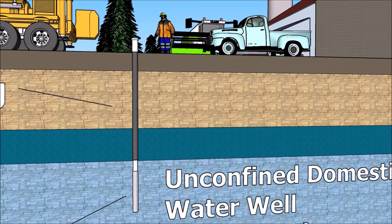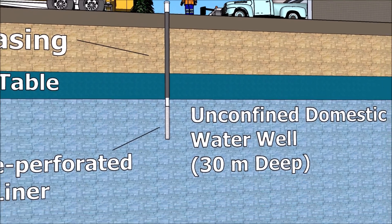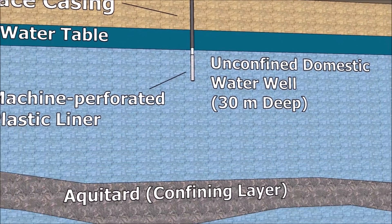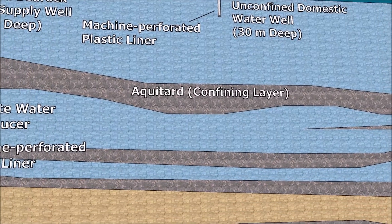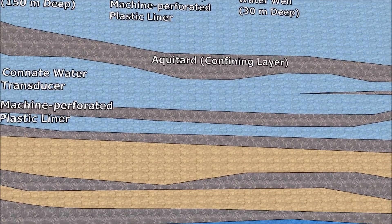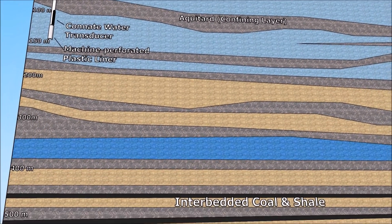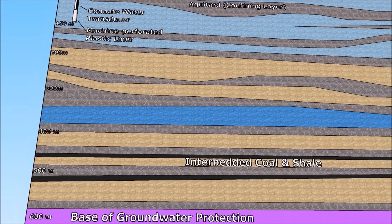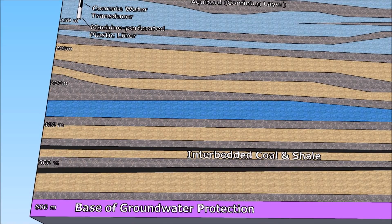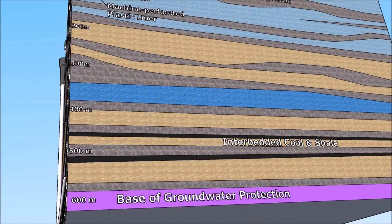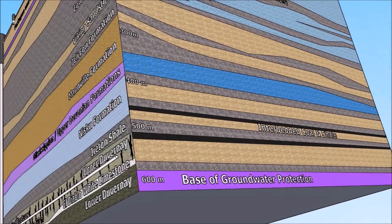What is a confined aquifer? A confined aquifer is under confining pressure and has relatively impermeable units, or aquitards, above and below the aquifer. A confined aquifer is subject to pressure greater than atmospheric pressure, resulting in the static water level rising above the top of the aquifer.